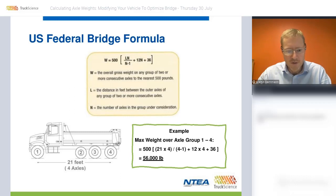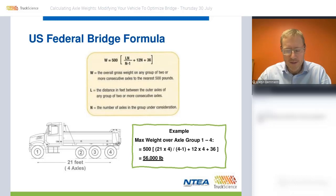Those are axle 1 to 2, axle 1 to 3, axle 2 to 3, 2 to 4, and 3 to 4. In other words, any two or more consecutive axles.